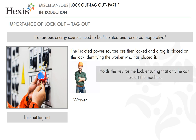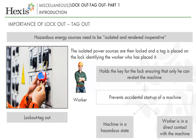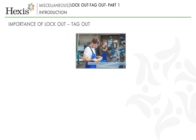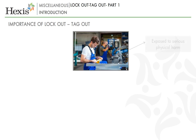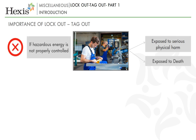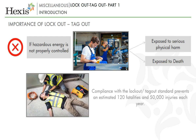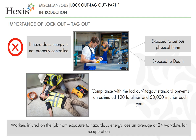The worker then holds the key for the lock, ensuring that only he or she can restart the machine. This prevents accidental start-up of a machine while it is in a hazardous state or while a worker is in direct contact with it. Compliance with the lockout or tagout standard prevents an estimated 120 fatalities and 50,000 injuries each year. Workers injured on the job from exposure to hazardous energy lose an average of 24 workdays for recuperation.